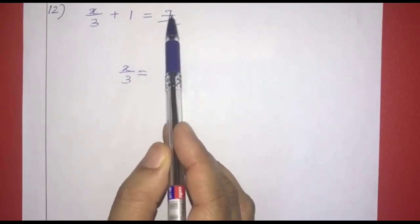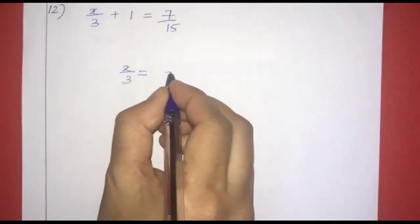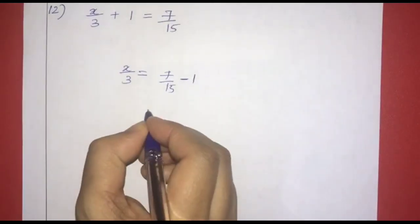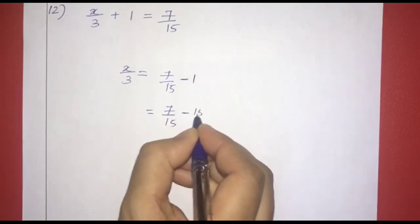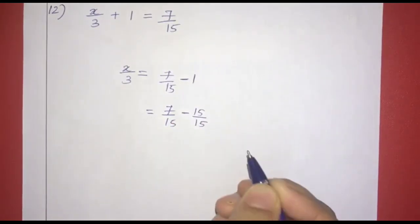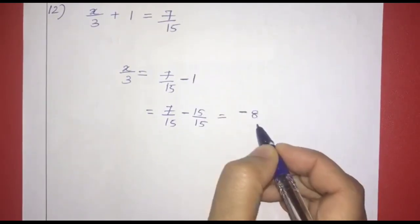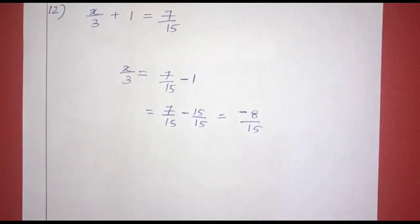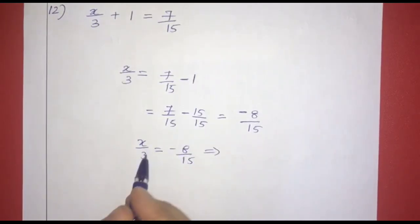Last question: x by 3 plus 1 equals 7 by 15. So x by 3 equals 7 by 15 minus 1. Converting 1 to 15 by 15, we get 7 minus 15 over 15, which equals negative 8 by 15. So x by 3 equals negative 8 by 15, which implies x equals negative 8 by 15 multiplied by 3, giving x equals negative 8 by 5.